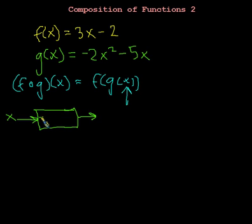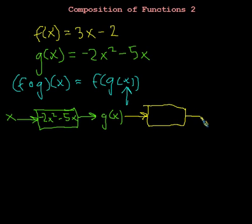And g is negative 2x squared minus 5x. And so then the output that we get is g of x. And with composition of functions, we'll then go ahead and we'll put that into another magic box. In this case,